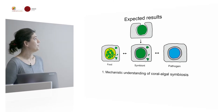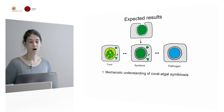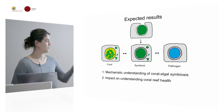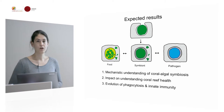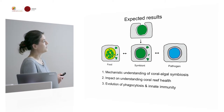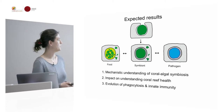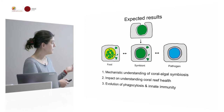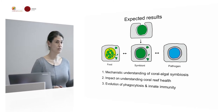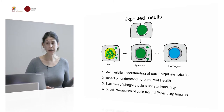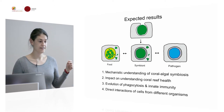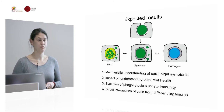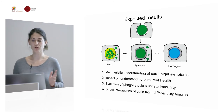In the end, what we actually expect is to create a mechanistic understanding of the coral-algal symbiosis itself, which hopefully will also have some impact on understanding coral reef health. We also plan to integrate our results with related processes, such as food phagocytosis or intracellular pathogenesis, which will allow us to better understand the evolution of phagocytosis and innate immunity. More broadly, we hope to better understand how two very different cells from different organisms come together to form this extremely successful symbiosis that drives the whole ecosystem.